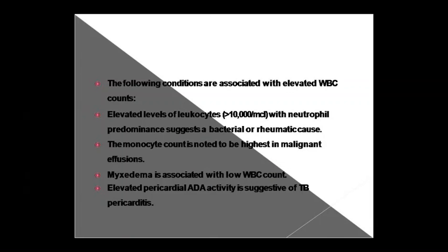The tests for pericardial fluid include physical, chemical, and microscopic examination — the same framework we have studied so far. In microscopic examination, we look at cell counts. If the WBC (leukocyte) count is elevated above 10,000 per microliter, and particularly if neutrophils are predominant, it can indicate bacterial infection or a rheumatic cause. If monocyte count is elevated, it indicates malignant effusion.